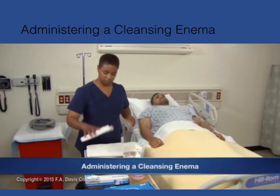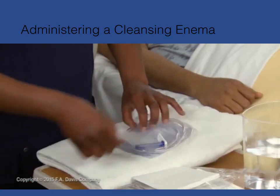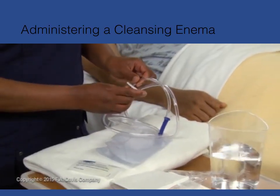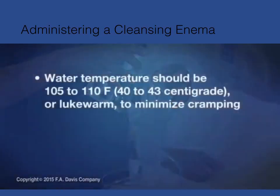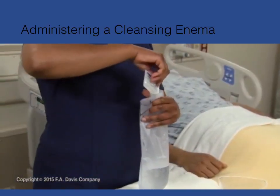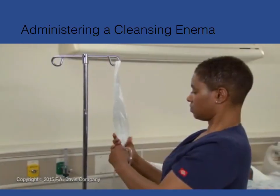When administering a cleansing enema, follow these steps. Place the bedpan nearby or commode near the bed. Open the enema supplies and attach tubing to the enema pail or solution bag. Close the clamp and fill the container with 500 to 1,000 milliliters of warm solution. Check the water temperature with a bath thermometer — it should be 105 to 110 degrees Fahrenheit (40 to 43 degrees centigrade) or lukewarm, to minimize cramping. It is not safe to warm the solution in a microwave. Add castile soap or the soap solution used by your facility if a soap suds enema has been prescribed; squeeze gently to mix.